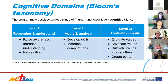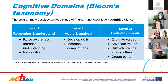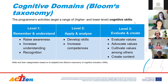We combined these domains with the cognitive domains of Bloom's taxonomy — that's from 1956, but we think it is still up to date, especially when combined with these domains. We have Level 1: remember and understand — to raise awareness, increase understanding and recognition. Level 2: apply and analyze — to develop skills and increase competences. And Level 3: evaluate and create. Amy will now present some details about our training programs.